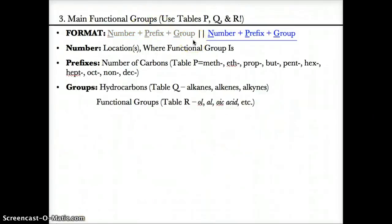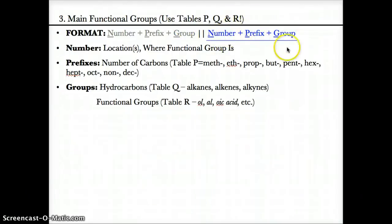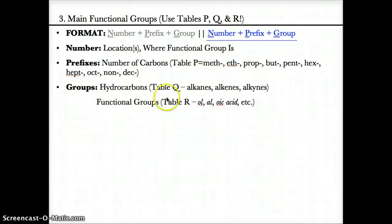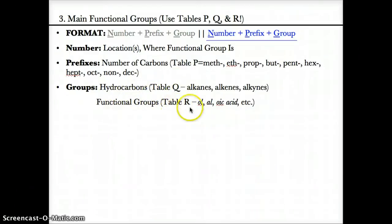Now let's discuss main functional groups. You have to use tables P, Q, and R. The format for naming functional groups is number plus prefix plus group, shown in blue, and it goes last in the name. The number matches the locations where the functional group is. Prefixes match up to the number of carbons based on table P, including meth, eth, prop, etc. The groups match up to hydrocarbons shown on table Q and to functional groups shown on table R, with endings given on both tables Q and R.